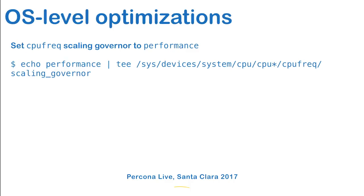Our focus today is not on OS-level optimizations, but I need to mention that our production hardware is highly optimized. When I started preparing for my talk, I didn't check that my test machine had the same settings as the production machine. One missing setting was the CPU frequency governor, which controls how much power is given to the CPU — it was set to power save, and I was disappointed when I started benchmarks. You need to synchronize your test environment settings with production, and set the governor to performance.